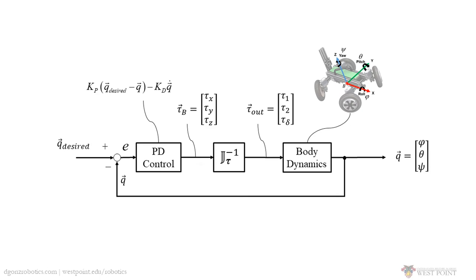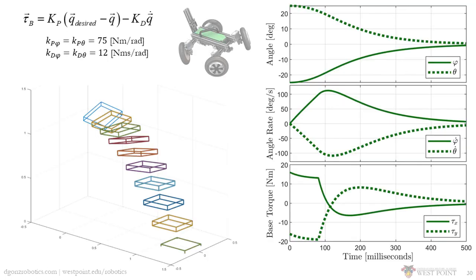Here is the full block diagram for our controller. Using the derivation of the Jacobian from before, we can convert the desired body torque vector in the body space to our output wheel drive torque and steering torque commands. To tune our controller,